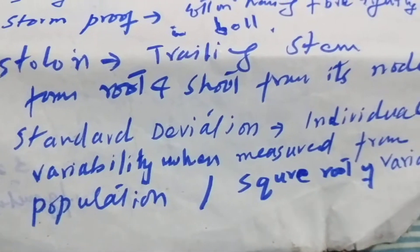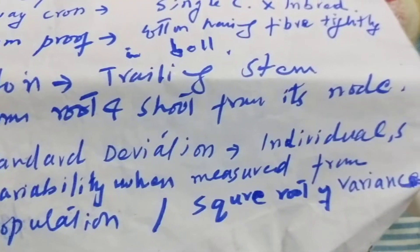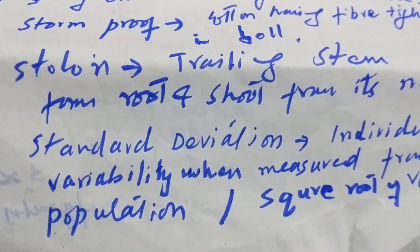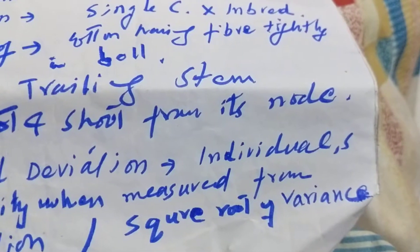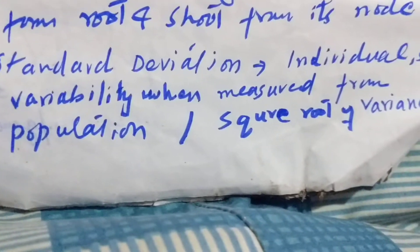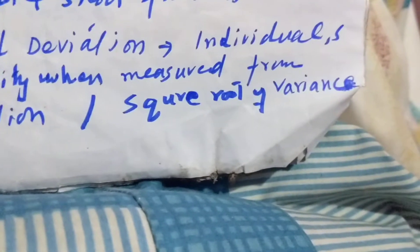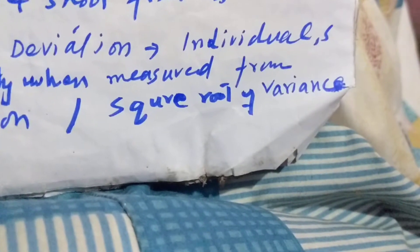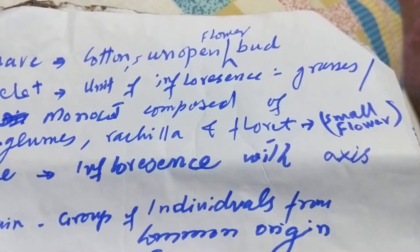Stolon is a trailing stem that forms roots and shoots from its nodes. Standard deviation is the individual's variability when measured from a population, or it can also be defined as the square root of variance.